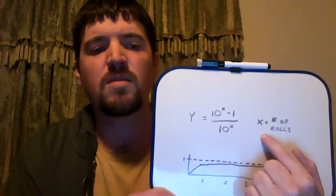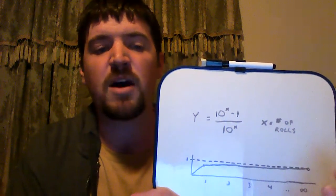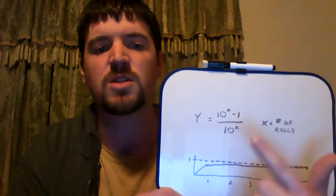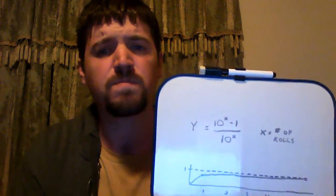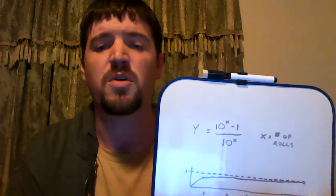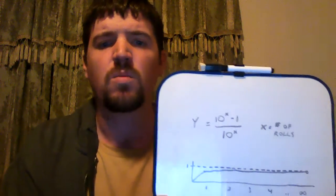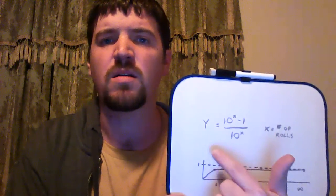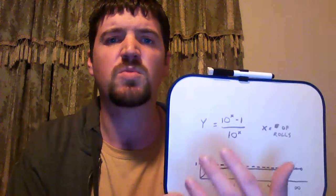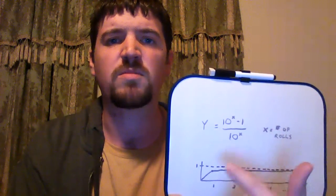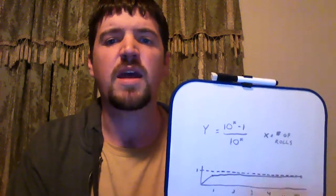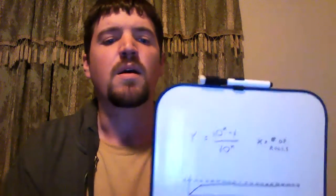We take the formula: (10^x - 1) / 10^x. For one roll: (10 - 1) / 10 = 9/10 = 0.9. Two rolls: (100 - 1) / 100 = 0.99, and so on. How do we know this never reaches 1? Simply replace y with 1 — what would x have to be for (10^x - 1) / 10^x to equal 1? It's obvious that can never happen: you're always subtracting something from the top that you're not subtracting from the bottom. No matter how big x gets, it gets closer to 1 but will never equal 1.